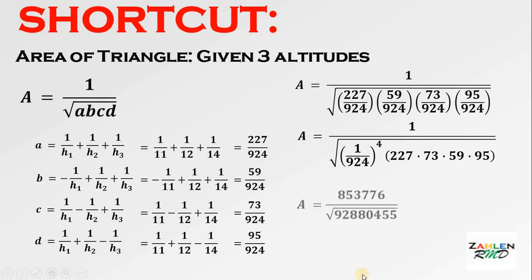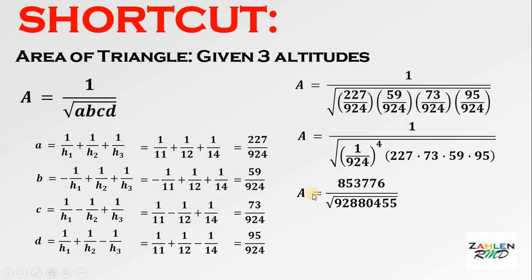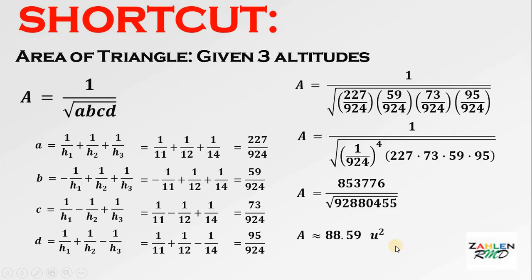Simplifying further, the area of the triangle equals 853,776 over the square root of 92,880,455, which is approximately equal to 88.59. Don't forget the unit — we have square units. And that's our answer.